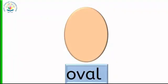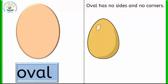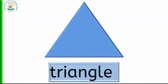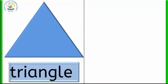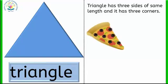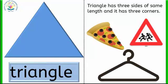Oval. Oval starts with the letter O. Oval has no sides and no corners. Objects with oval shapes are egg and badminton racket. Triangle. Triangle starts with the letter T. Triangle has three sides of the same length and it has three corners. Objects with triangle shapes are a slice of pizza, road sign board, hanger, and many more. You can find objects related to these shapes all around you.